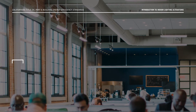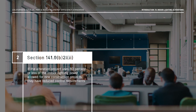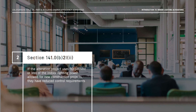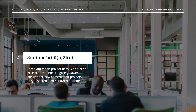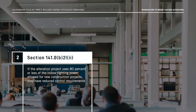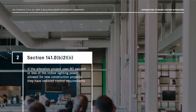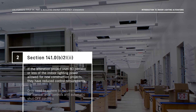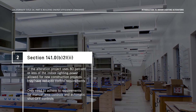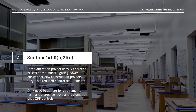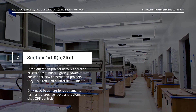Option 2: If the alteration project uses 80% or less of the indoor lighting power allowed for new construction projects, they have reduced control requirements. Projects need only to adhere to requirements for manual area controls and automatic shut-off controls.